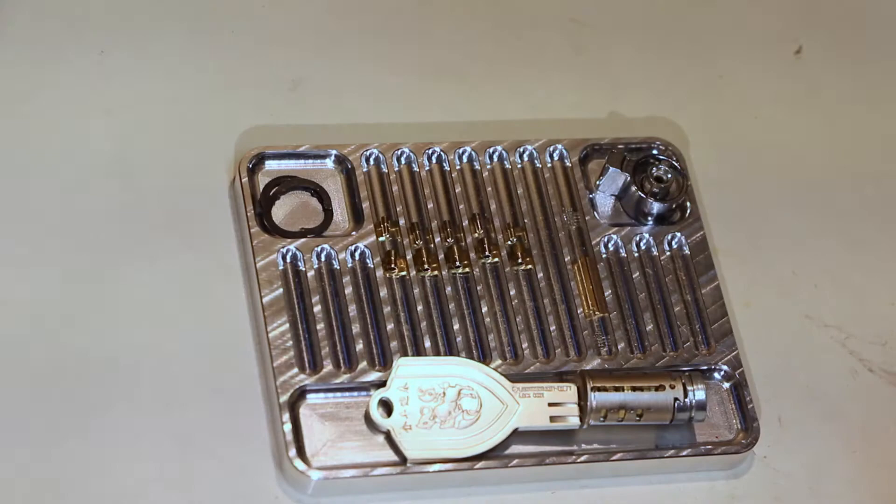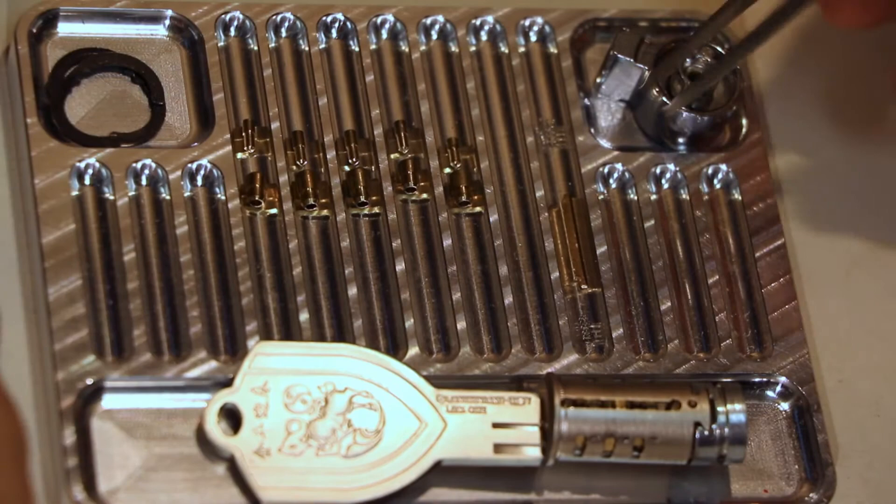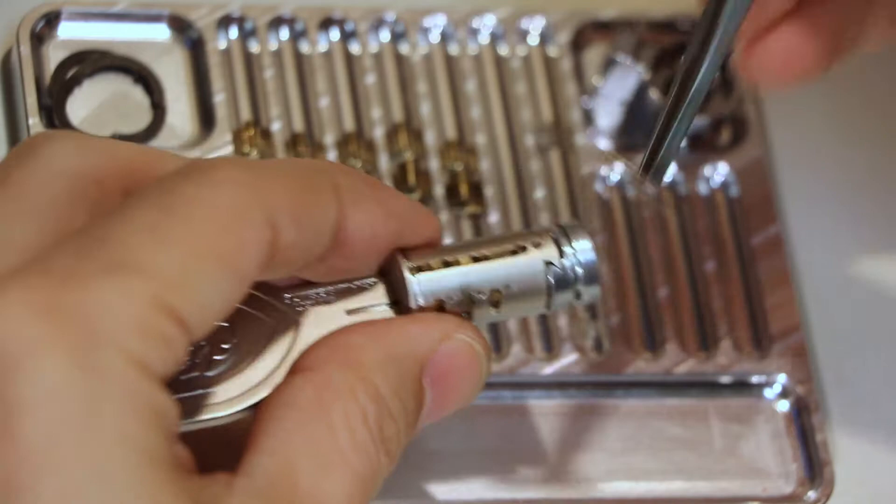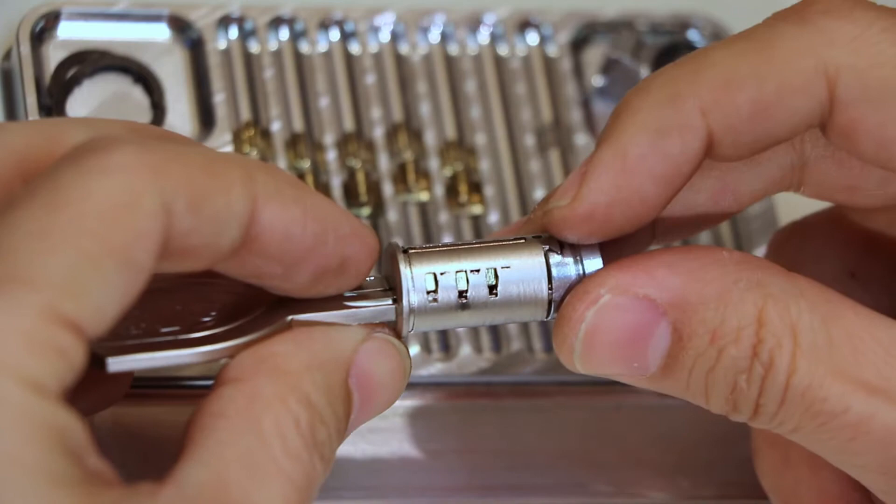The sliders didn't matter because I don't have the springs in here for the sidebar right now, just to show how far down the slider sits when you have the key in. Okay, so that looks good, right? Key in, the slider drops all the way down, and I shouldn't be able to take the key out because the sliders should be in their gates. Oh, but the key comes out, right? And the sidebar's still down.